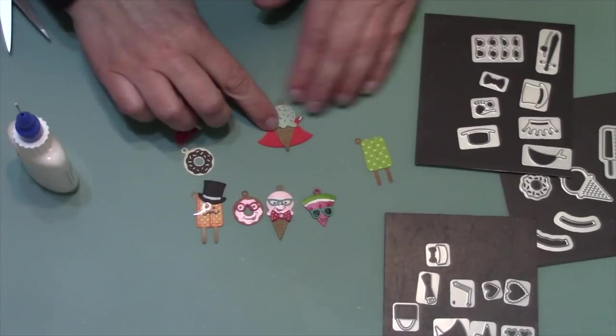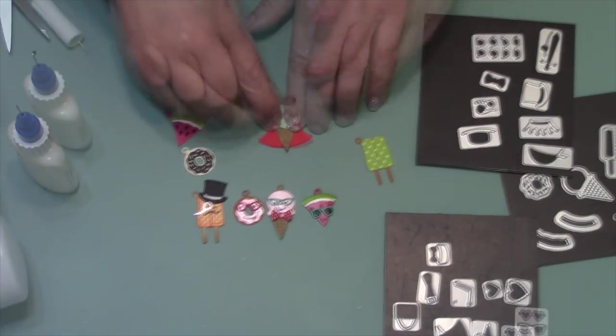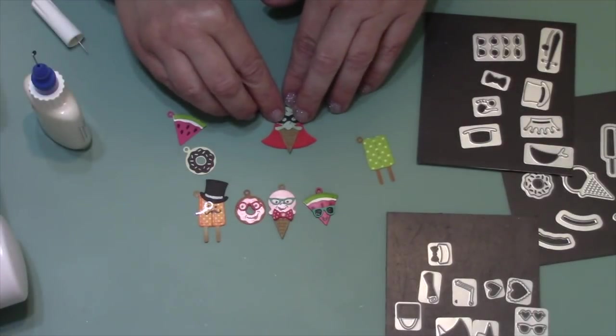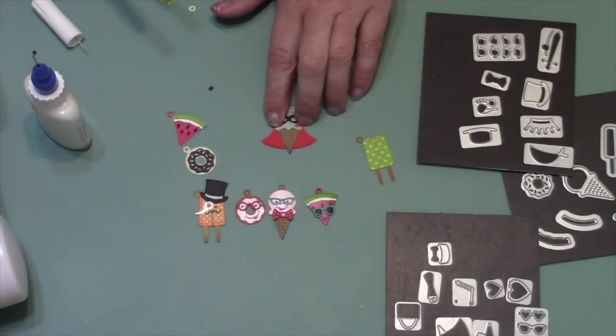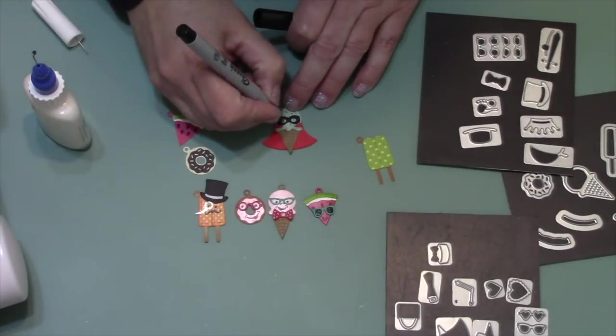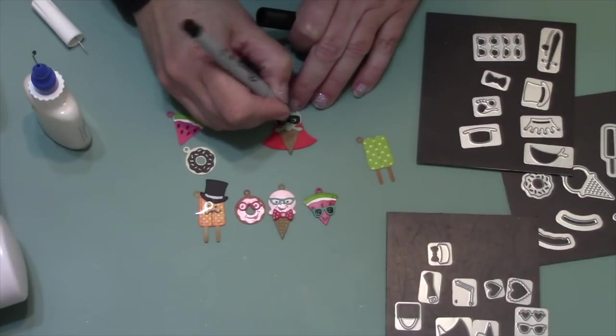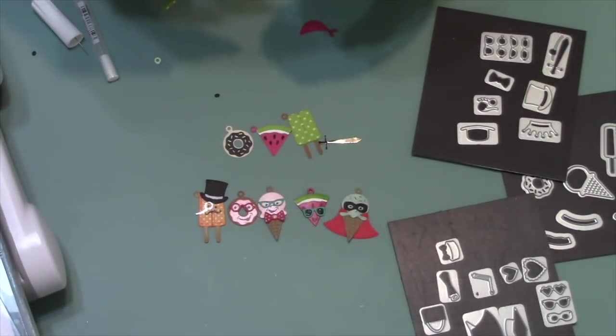The superhero cape is real easy. You just place your item over the cape and then fold in the two little triangles at the top and glue them down, and then add the superhero mask at the top. Then I'll just finish out by using a black pen to draw in a couple of eyes.